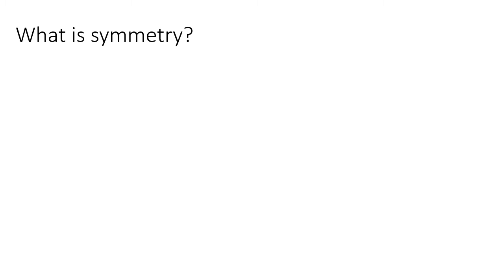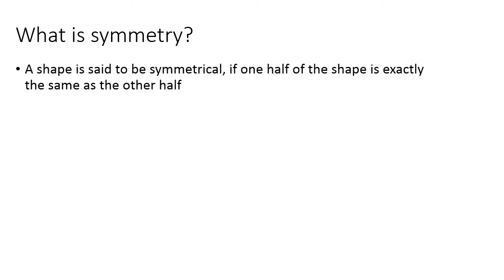All shapes which can be divided into two equal parts with at least one straight line are known as symmetrical shapes. The standard definition of symmetry: a shape is said to be symmetrical if one half of the shape is exactly the same as the other half.